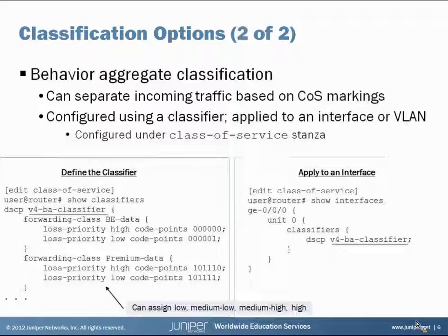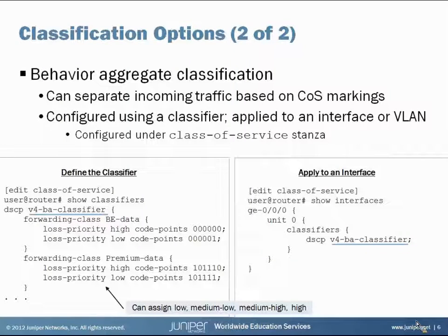The second option for classification is called behavior aggregate classification. This type of classification is used when the traffic coming into your device already has CoS markings in the header. You can make use of these incoming markings and instead of looking through various other packet header fields, use these markings to directly assign traffic to a queue and send it on for further CoS processing.